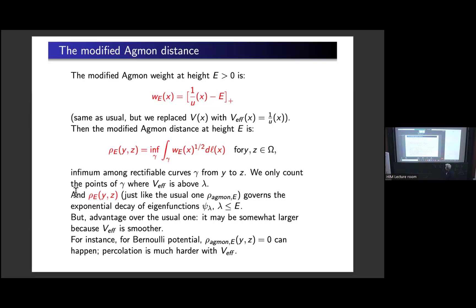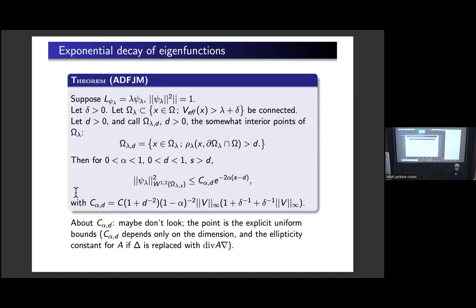Why is this modified Agmon distance better than the usual one with potential V? For Bernoulli potentials, there could be a path where V is always zero connecting any two points, making the usual Agmon distance zero — giving no decay. The advantage of the effective potential is that it is smoother and tends to be strictly positive, so exponential decay is obtained in more cases. The idea is the same as usual, but using a better form of the operator.